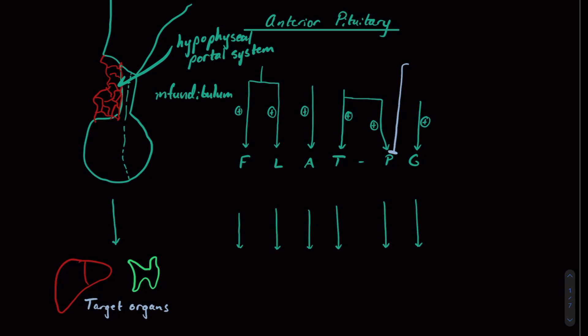So how are we going to memorize all these organs? The name of the game in the MCAT is to use mnemonics. The best mnemonic is FLAT PIG. They put an E between the P and the G, but that stands for endorphins, which isn't really high yield on the MCAT.